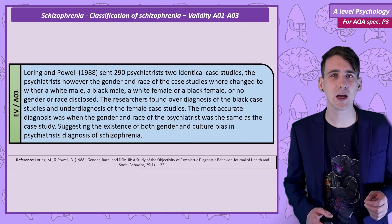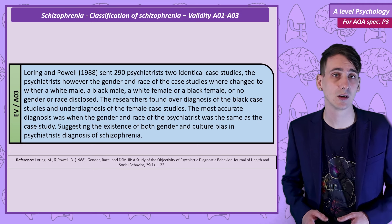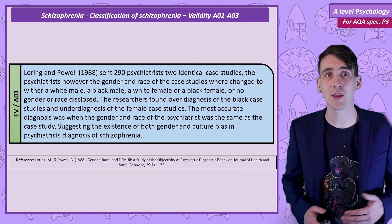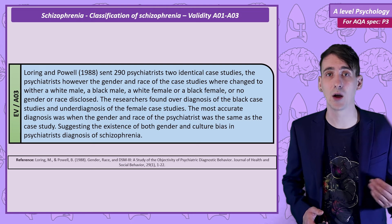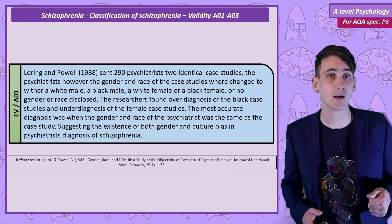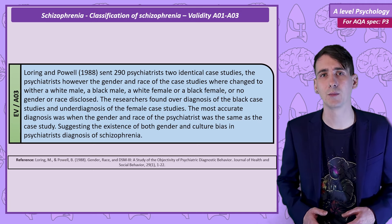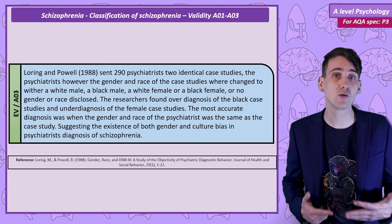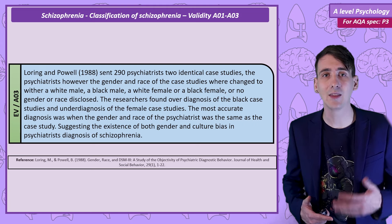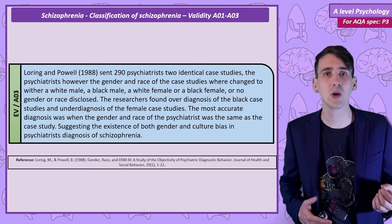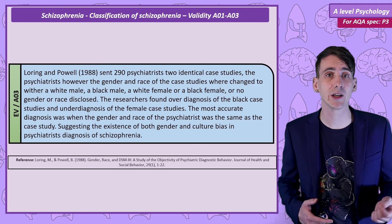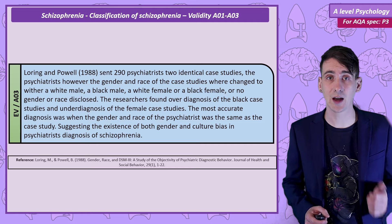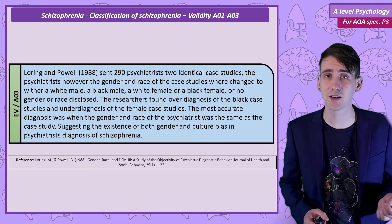Loring and Powell provide research evidence for diagnostic bias in both gender and race. They sent the same two case studies to 290 psychiatrists, but described the clients as either a white male, a black male, a white female, a black female, or with no details on gender and race. It was found that the sex and race of both the client and the psychiatrist influenced the diagnosis — women were less likely to be given a diagnosis of schizophrenia and black clients were more likely. The most accurate diagnosis was when the client's race and sex were the same as the psychiatrist's.